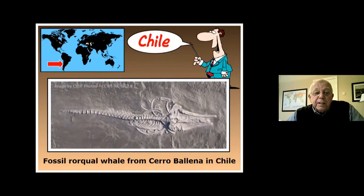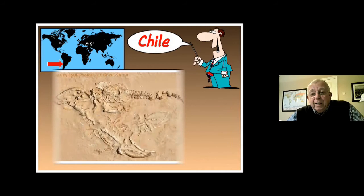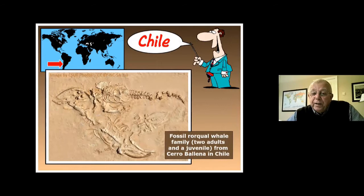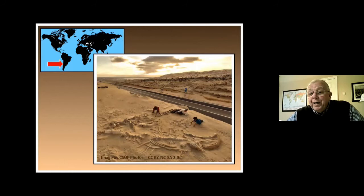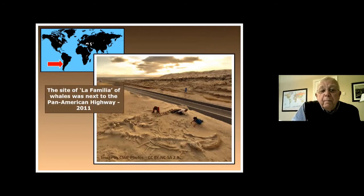Same area — a fossil bowhead whale family: two adults and a juvenile who died at the same time and became part of the fossil record. There's a photo of the dig with the highway passing by, the archaeologists digging away and sweeping bit by bit through the various sedimentary rocks, exposing the fossils of the whales. The site of La Familia — the family whales — was next to the Pan-American Highway, 2011.